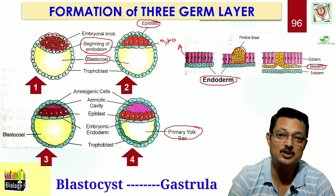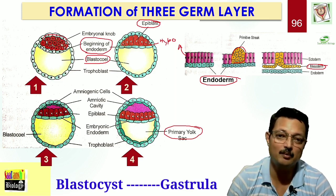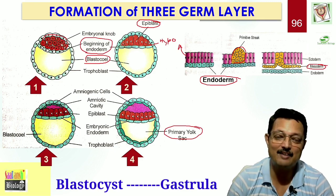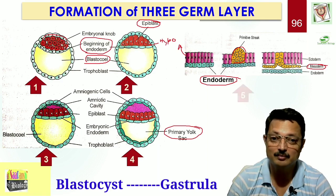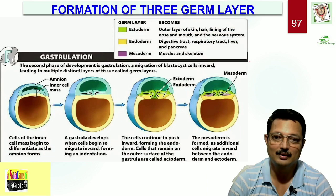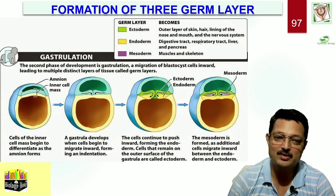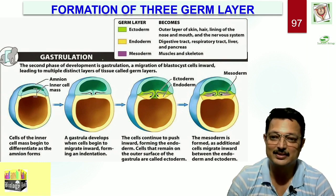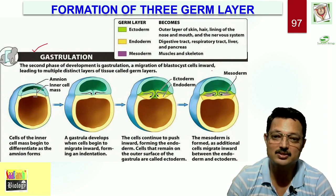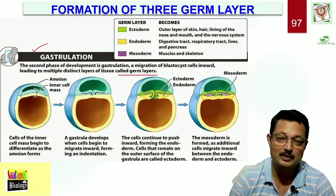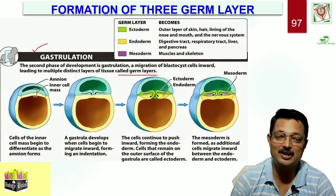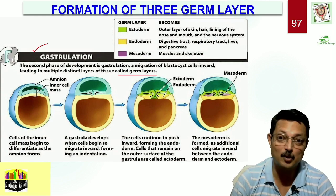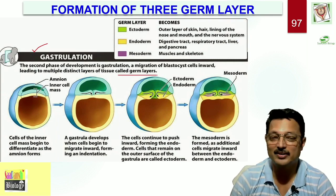So endoderm is the first germ layer to be formed, followed by ectoderm, and then mesoderm from the primitive streak. The ectoderm gives rise to the outer layer of skin, hair, lining of the nose and mouth, and the nervous system. Endoderm gives rise to the digestive tract, respiratory tract, liver, and pancreas. Mesoderm gives rise to muscles and the skeleton. This concept of germ layers also forms a basis for classification in the animal kingdom — animals with two germ layers are called diploblastic, and those with three are triploblastic, further classified as acoelomate, pseudocoelomate, or coelomate.